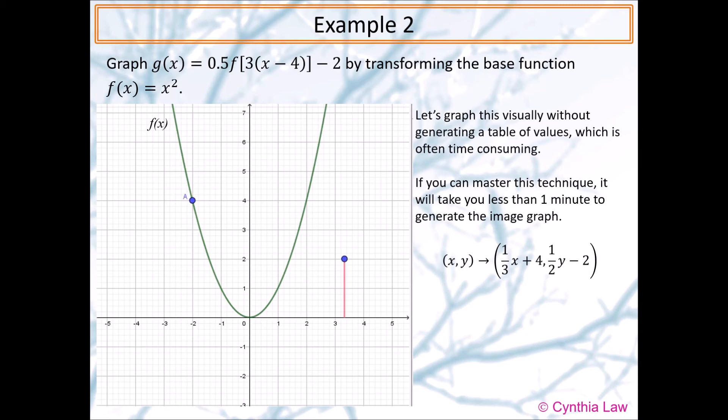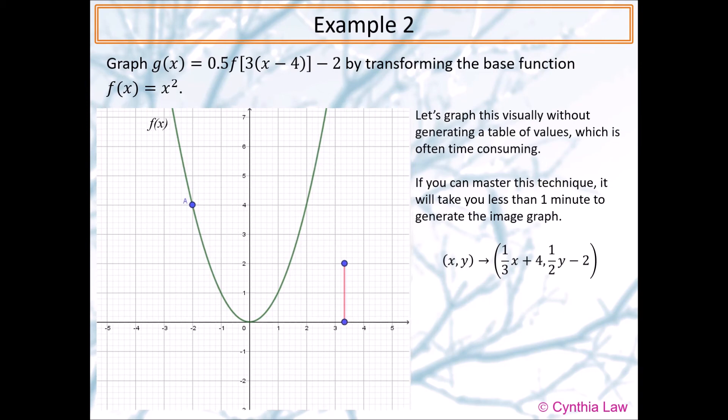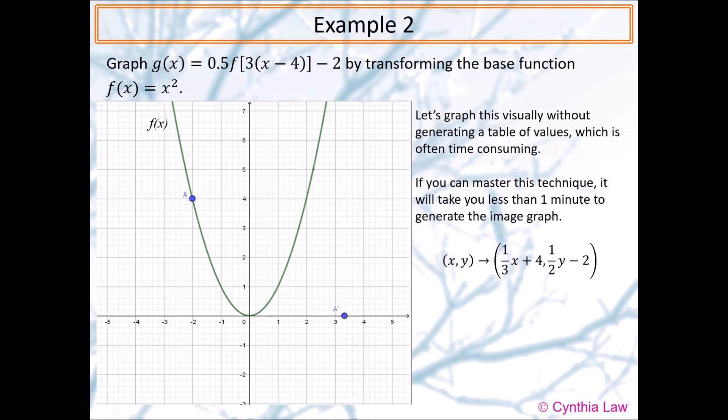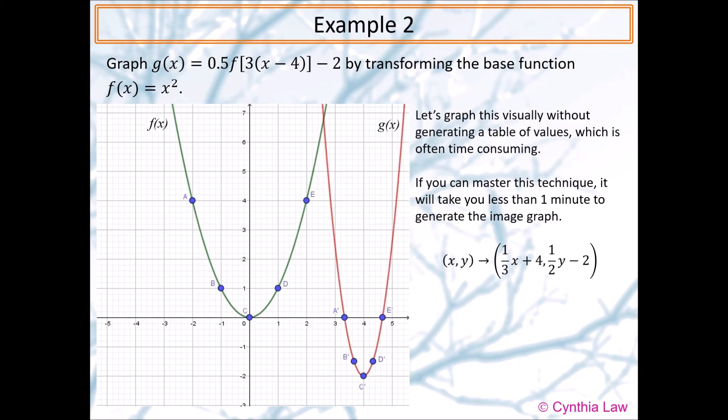Now we need to apply the vertical translation, two units down, which means I end up on the x-axis itself. So there's my dot. Remember to label the point as A'. Then we do the same thing to the other points and we will have the same curve as when we did it using a table of values.